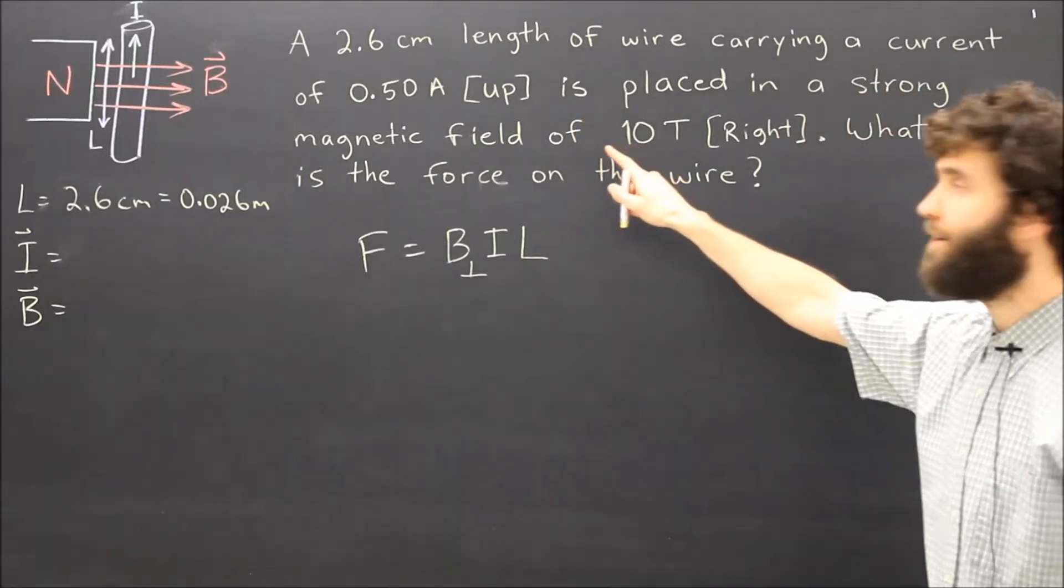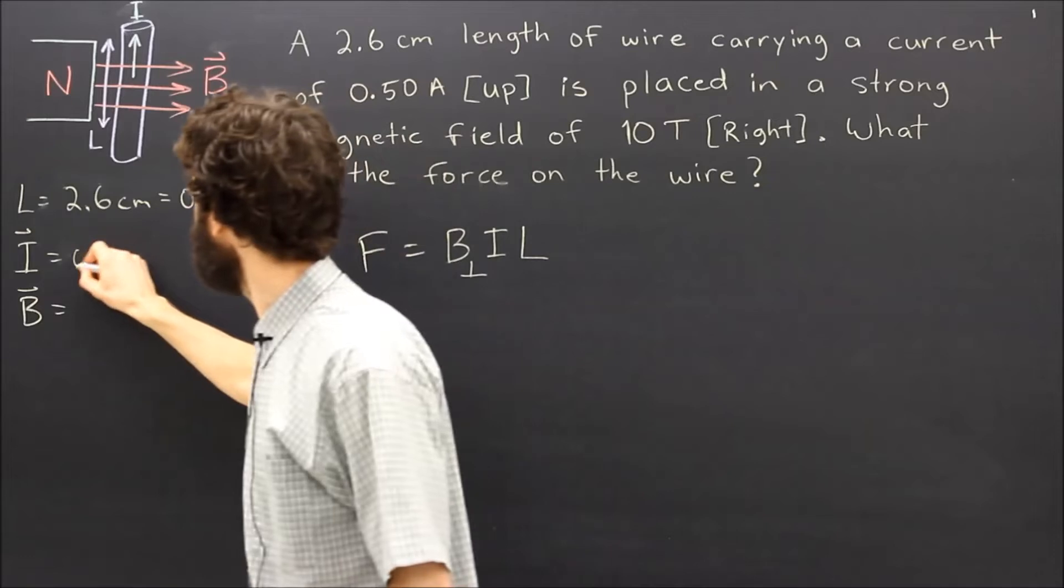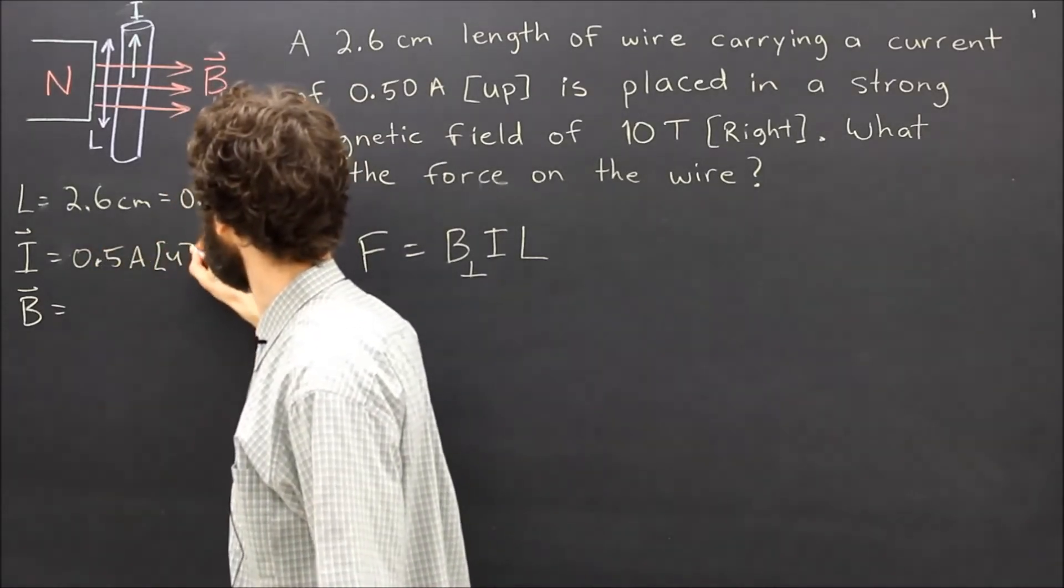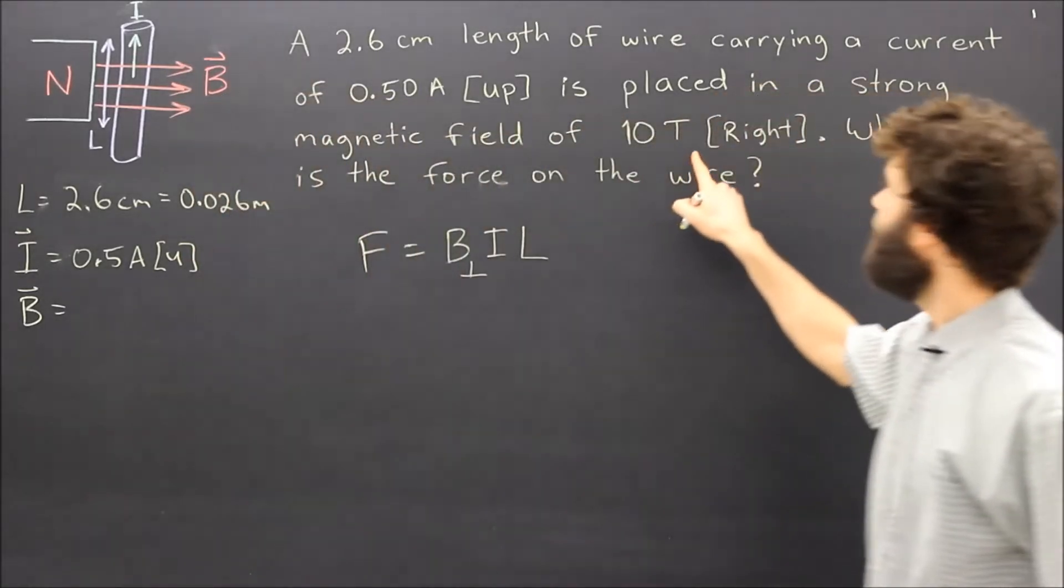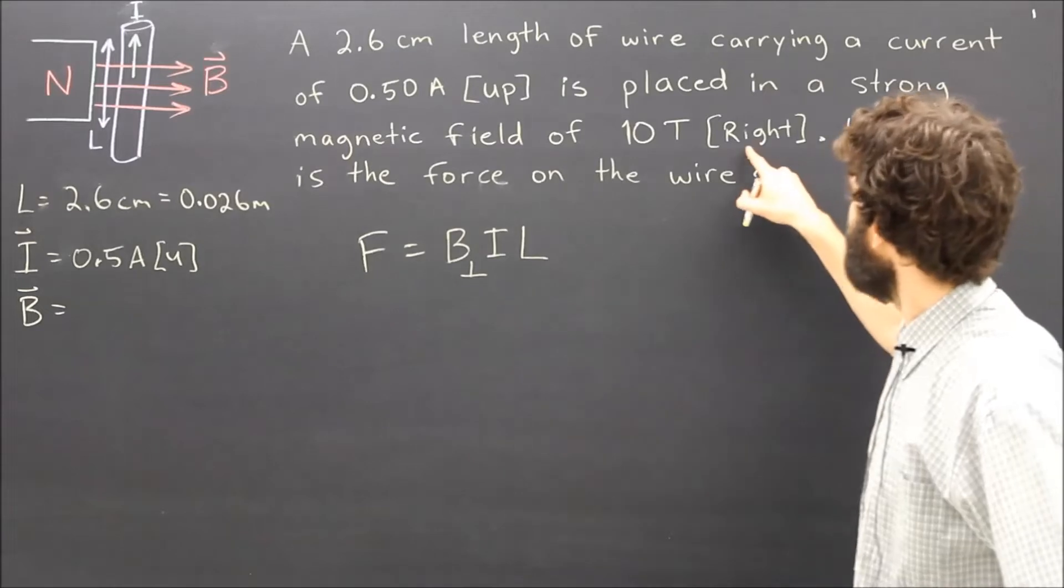The current in the wire is 0.5 amperes up, and finally this strong magnetic field is 10 tesla and it's to the right.